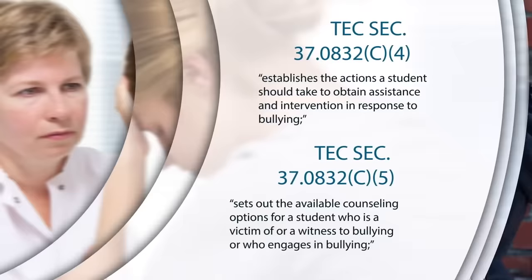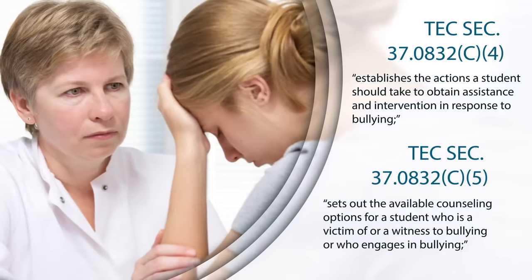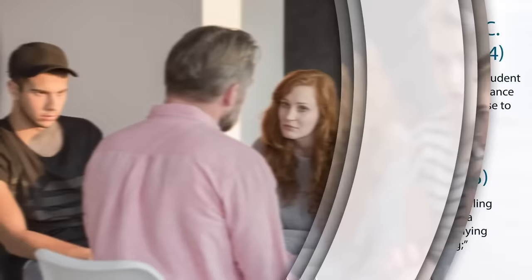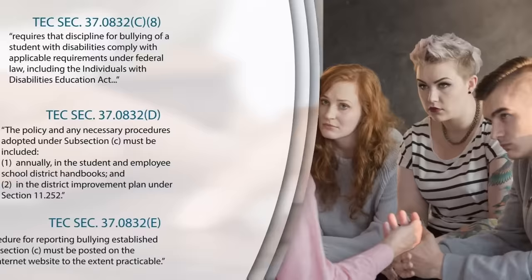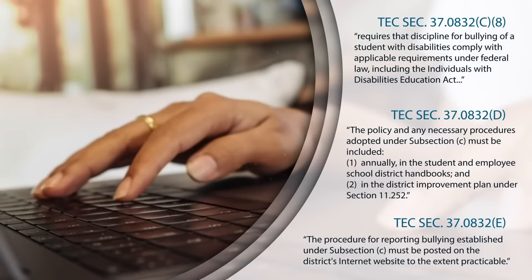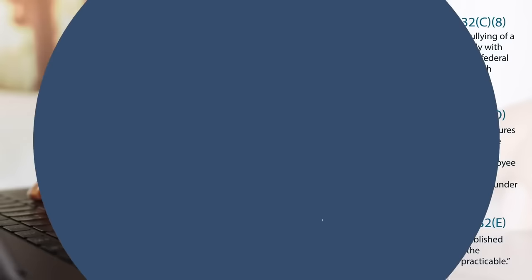Schools cannot discipline a victim of bullying for using self-defense. Schools must establish actions students should take to get help concerning bullying, including establishing counseling options for victims and bullies. The school may establish a policy for assisting in the prevention of bullying and mediation of bullying incidents between students. The disciplinary response to bullying of a student with disabilities must comply with federal law. The district's bullying prevention policy must be included in the school district's handbook and in the district improvement plan, and the district's bullying reporting procedure must be posted on the district's internet website.